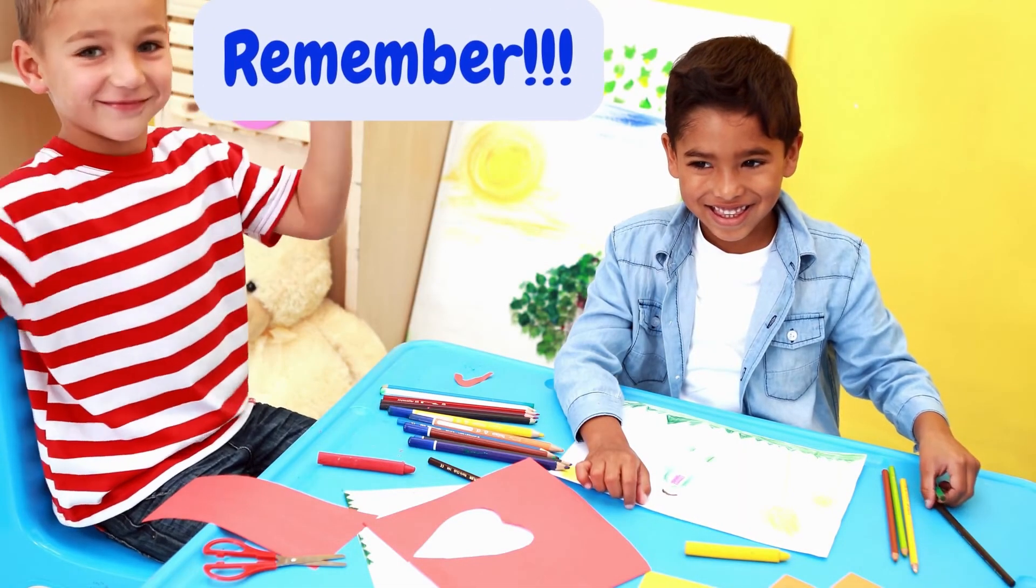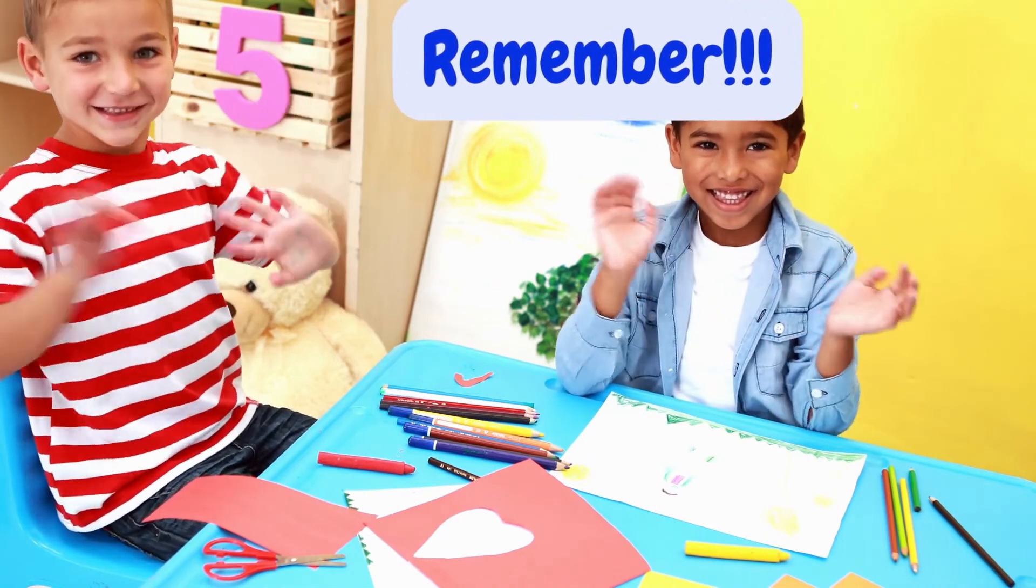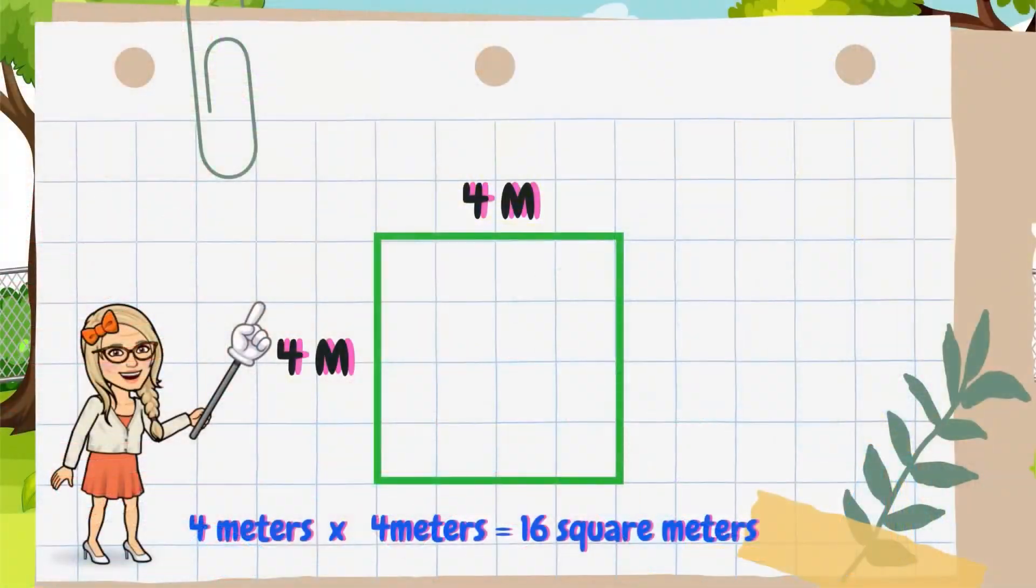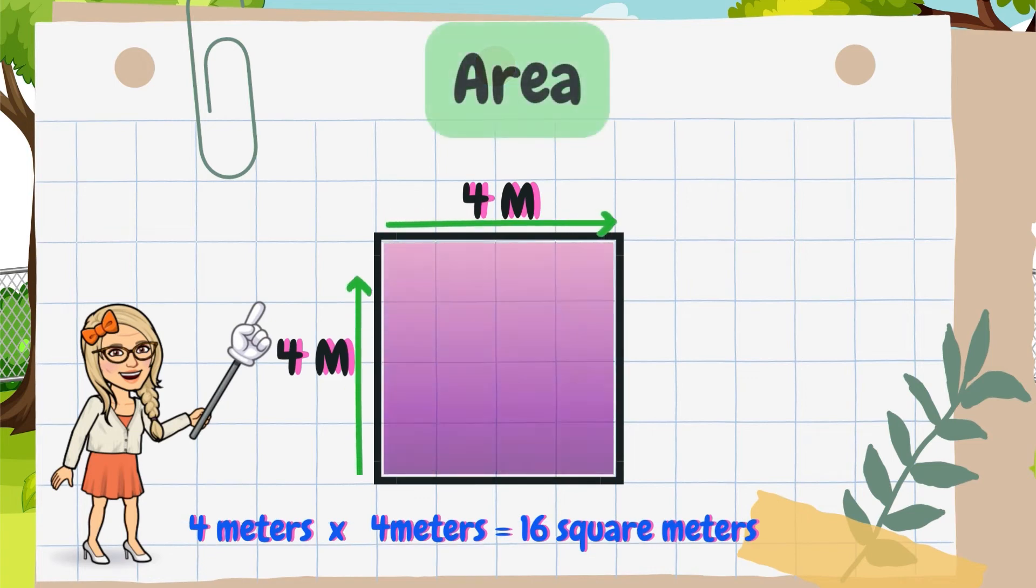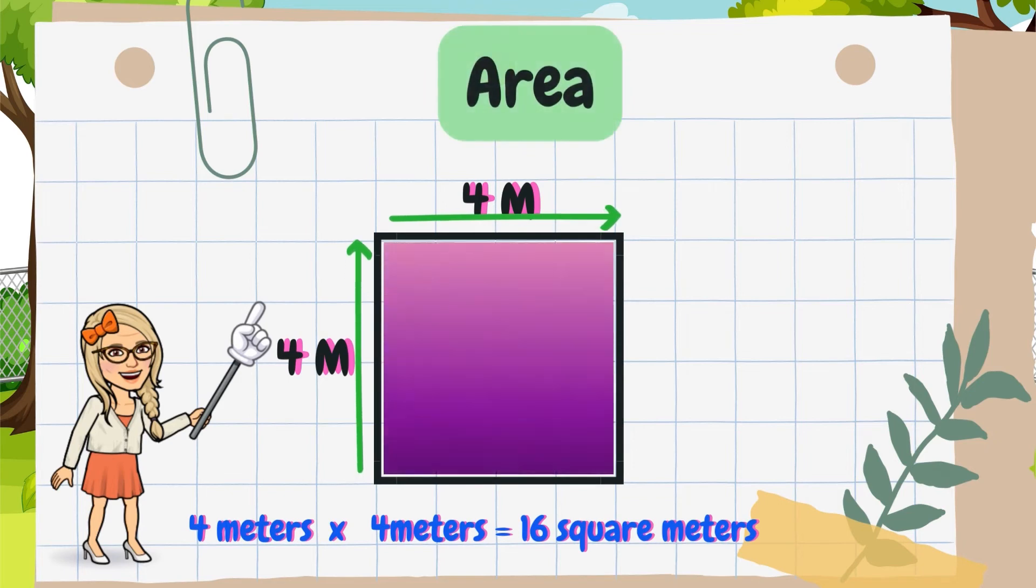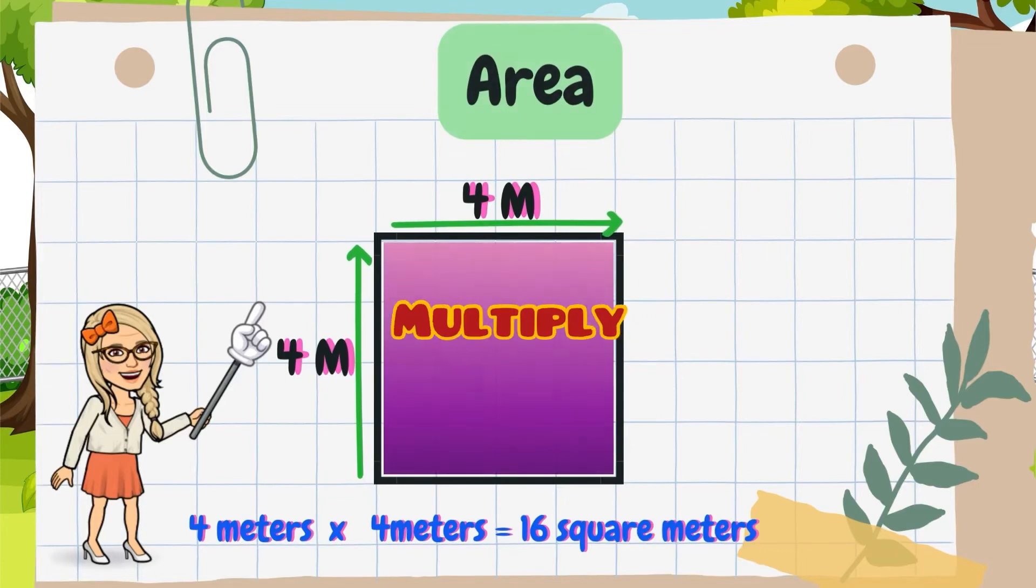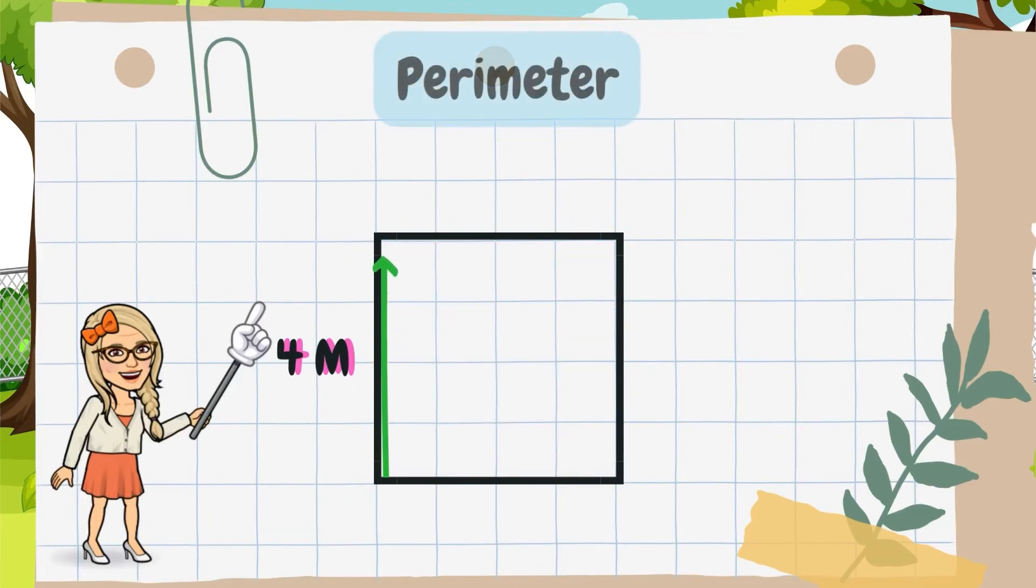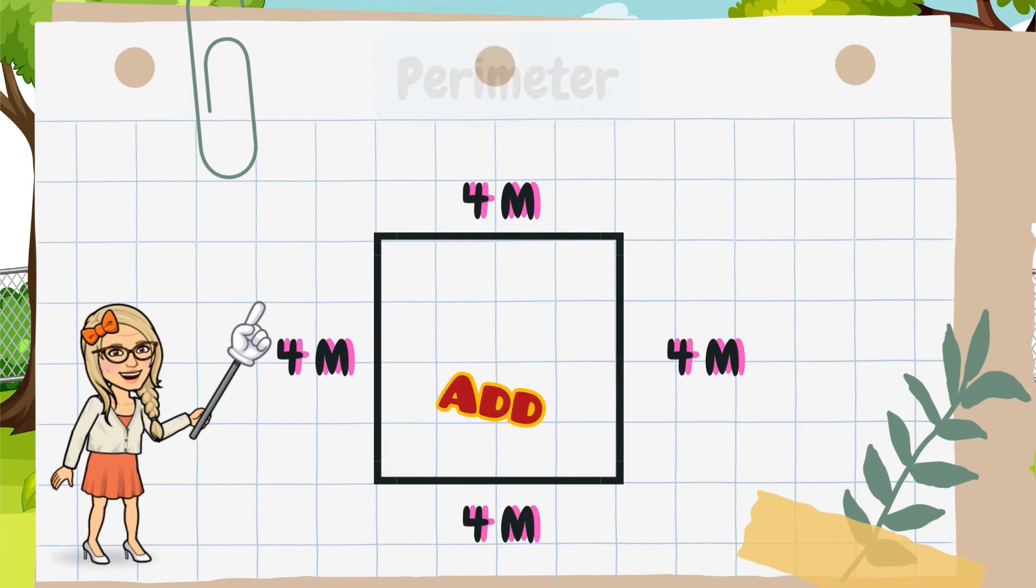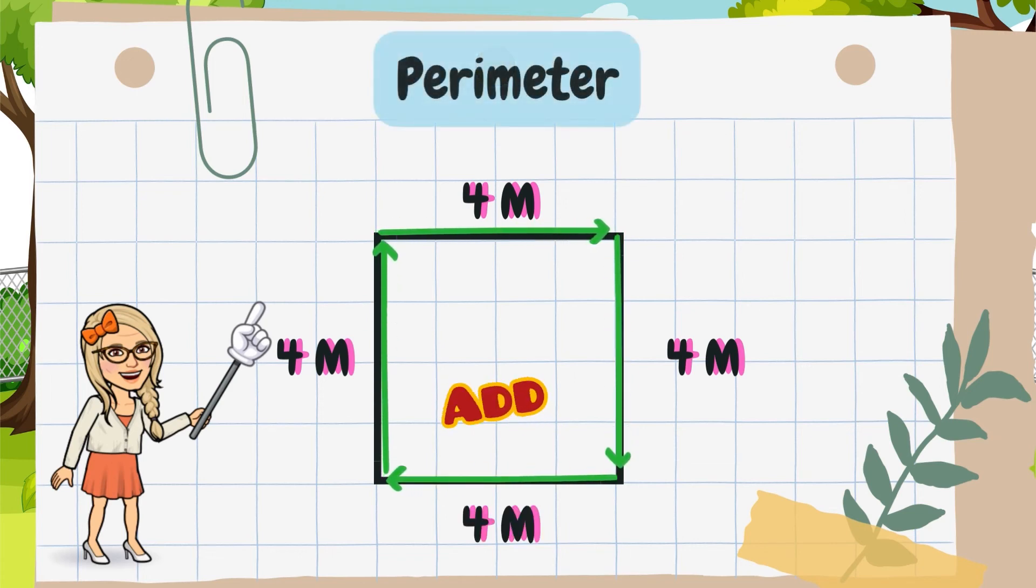Well, we're almost at the end of the video, guys. I want to give you a quick reminder about area and perimeter. Remember that area is the inside space of a shape. In area, we just multiply the length times the width to find the inside space. In perimeter, we have to add all the sides together. Like in this case, 4 plus 4 plus 4 plus 4. And that will give us the perimeter of this square, which is 16.